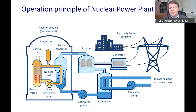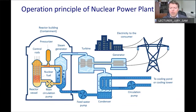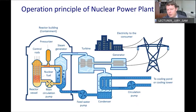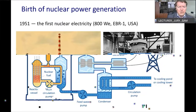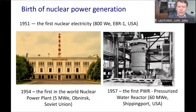We also have what is sometimes called the third circuit — it is an open circuit that uses water from, for example, an ocean, cooling tower, or river. This water is used to condense the steam in the condenser and make feed water. Of course, the generator produces electricity, which is then distributed to factories and homes.